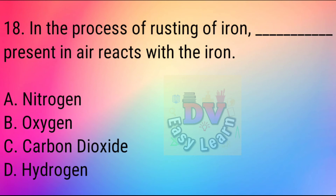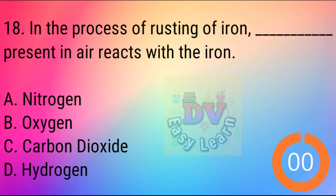Question No. 18: In the process of rusting of iron, dash present in air reacts with the iron. Correct answer: Oxygen.